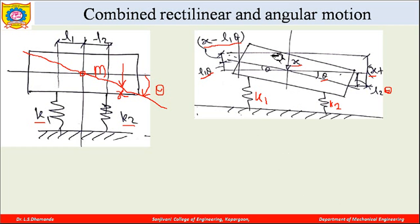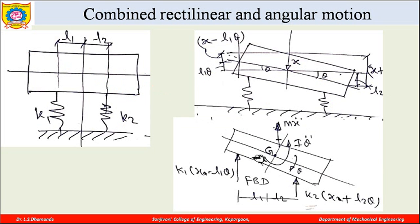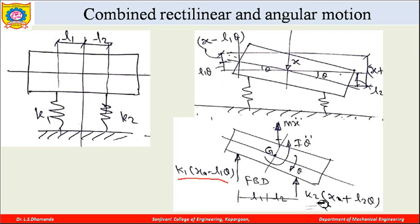Now we draw the free body diagram of this block and present the different forces acting on it. The spring force is proportional to the displacement and equals stiffness multiplied by displacement. For spring k1, the force is k1·(x − l1·theta) acting upward. Similarly, spring k2 is also in compression, so the reaction force on the mass is k2·(x + l2·theta) acting upward.